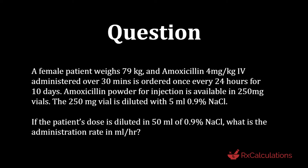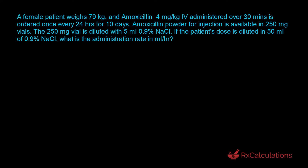The question says: a female patient weighs 79 kilograms and amoxicillin 4 milligrams per kilogram IV, administered over 30 minutes, is ordered once every 24 hours for 10 days. Amoxicillin powder for injection is available in 250 milligram vials. The 250 milligram vial is diluted with 5 milliliters of 0.9% sodium chloride solution. If the patient's dose is diluted in 50 milliliters of 0.9% sodium chloride solution, what is the administration rate in milliliters per hour?